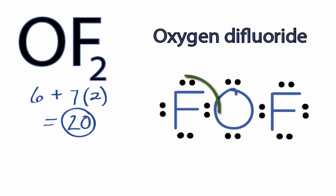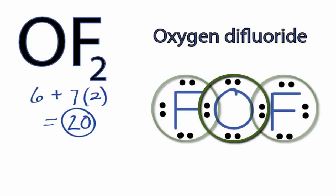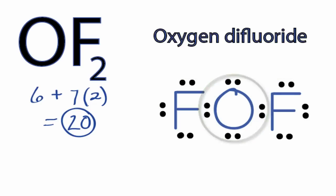At this point, you can see the fluorine on the left and on the right have eight valence electrons, so they both have an octet, full outer shell. And then the oxygen in the center also has an octet with eight valence electrons. We've used 20 valence electrons and filled the octets for all of the atoms.